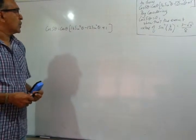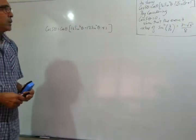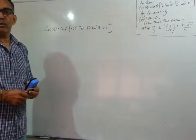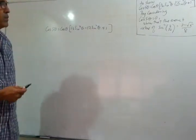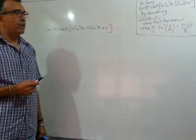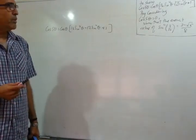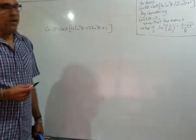Now the question goes on to say, by considering cos 5θ equals 0, show that the exact value of sin squared π over 10 equals 3 minus square root 5 over 8.